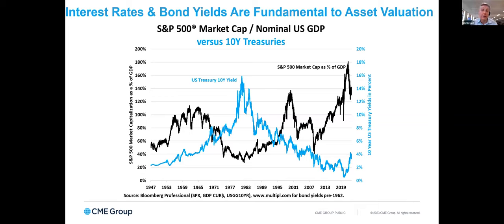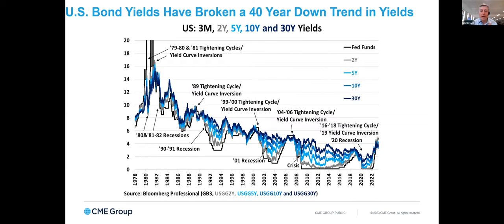We're seeing the same thing now in real estate — interest rates have soared around the world and now real estate values are starting to come down. For 40 years, from roughly 1980 or 1981 up until the beginning of 2022, interest rates were largely on a one-way path going lower. But now that cycle has been broken in a very big way. Interest rates have now risen above their previous peak for the first time in many decades.